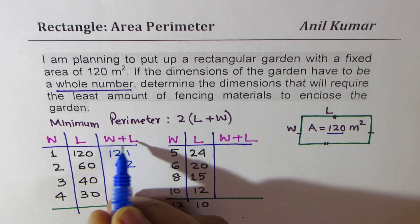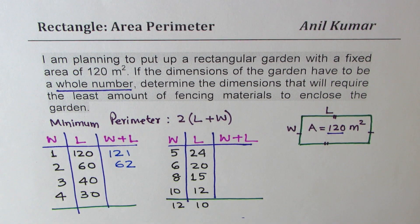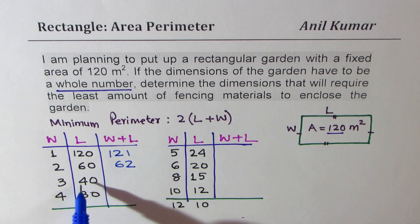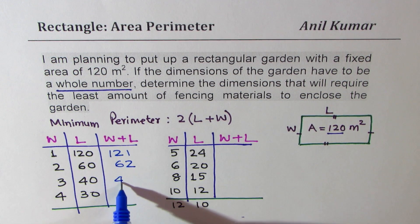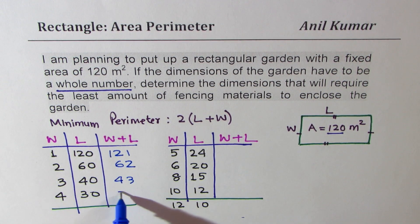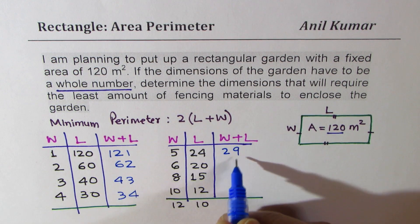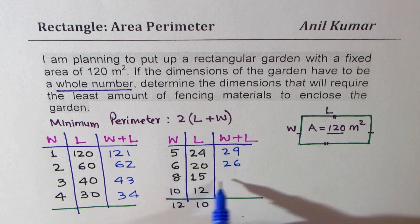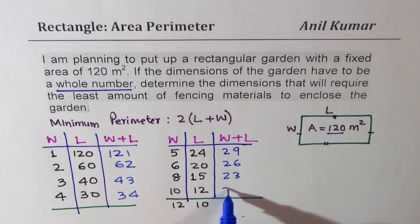Do you see that combination of width and length is decreasing? That means perimeter is decreasing. So this is 43. Just add them up. This is 34. It is still decreasing. 29, 26, 23, and that is 22.